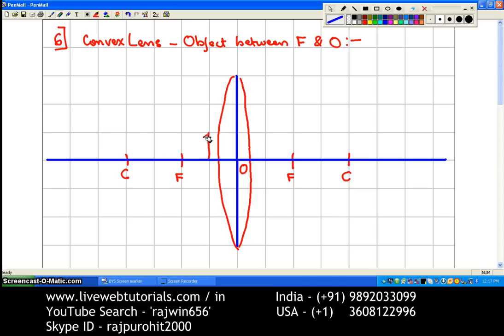This is the position of the object. I will mark this as AB. Now I am supposed to draw the rays to get the image.